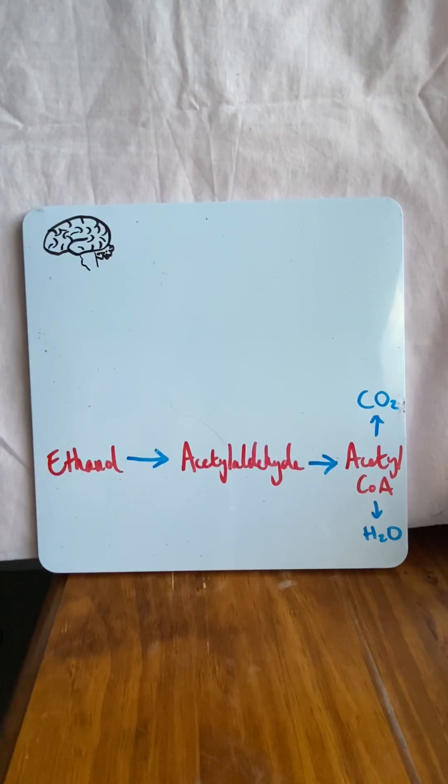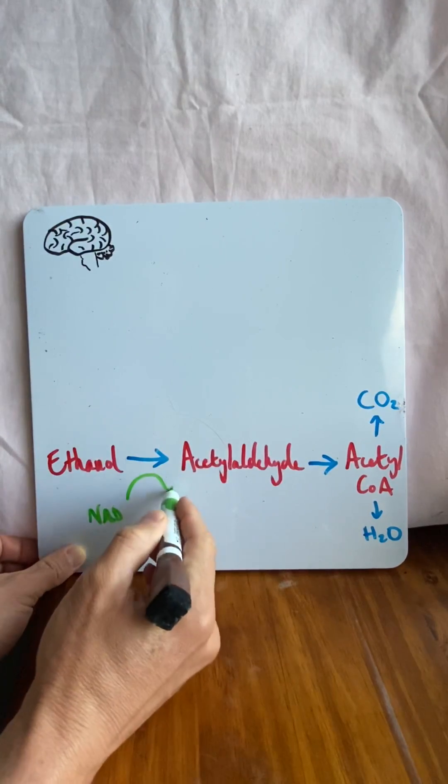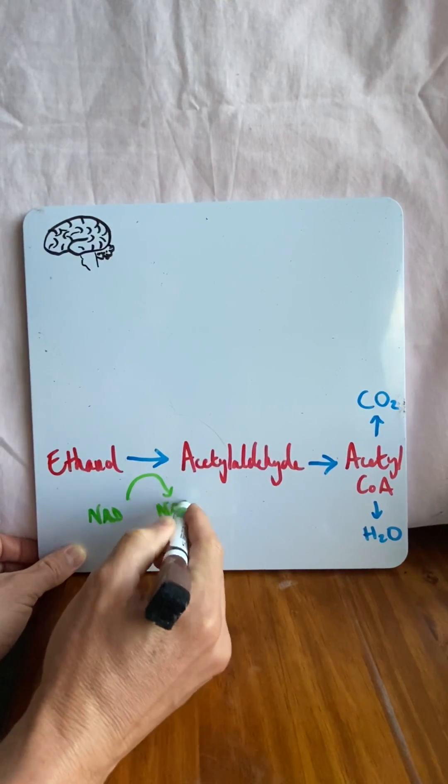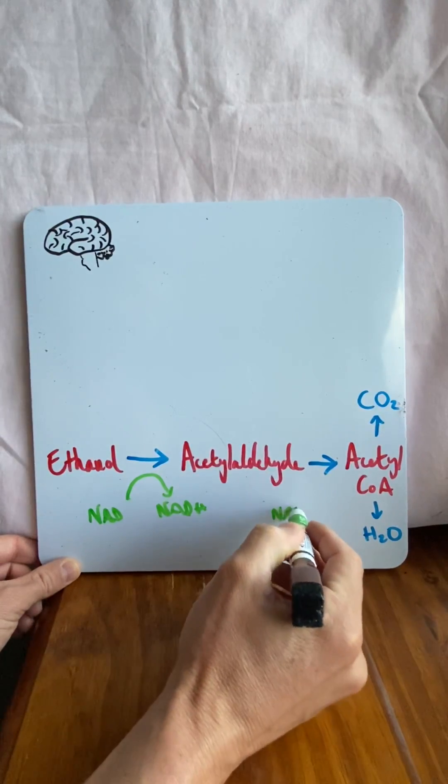Brilliant. In order to do this though, we need energy. Not ATP, but NAD. We turn NAD into NADH. And this is happening at each of these steps, right? NAD into NADH.